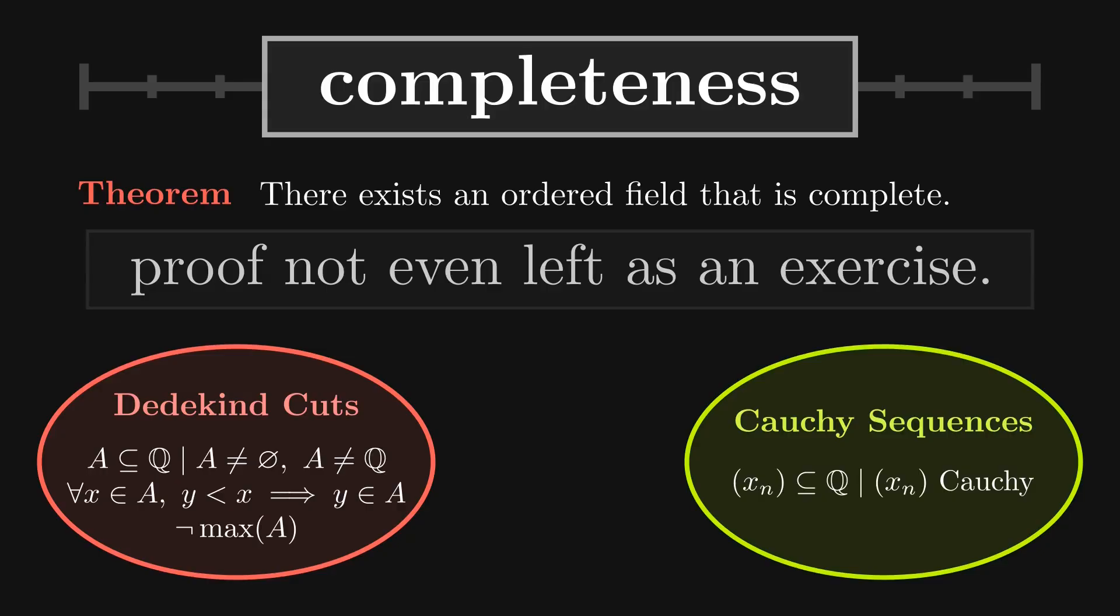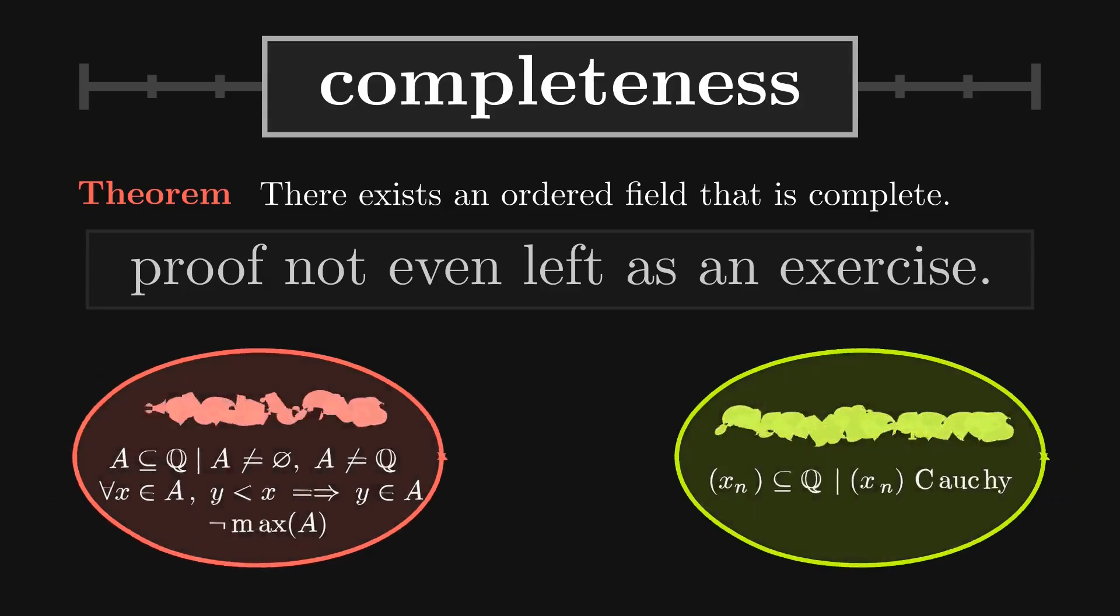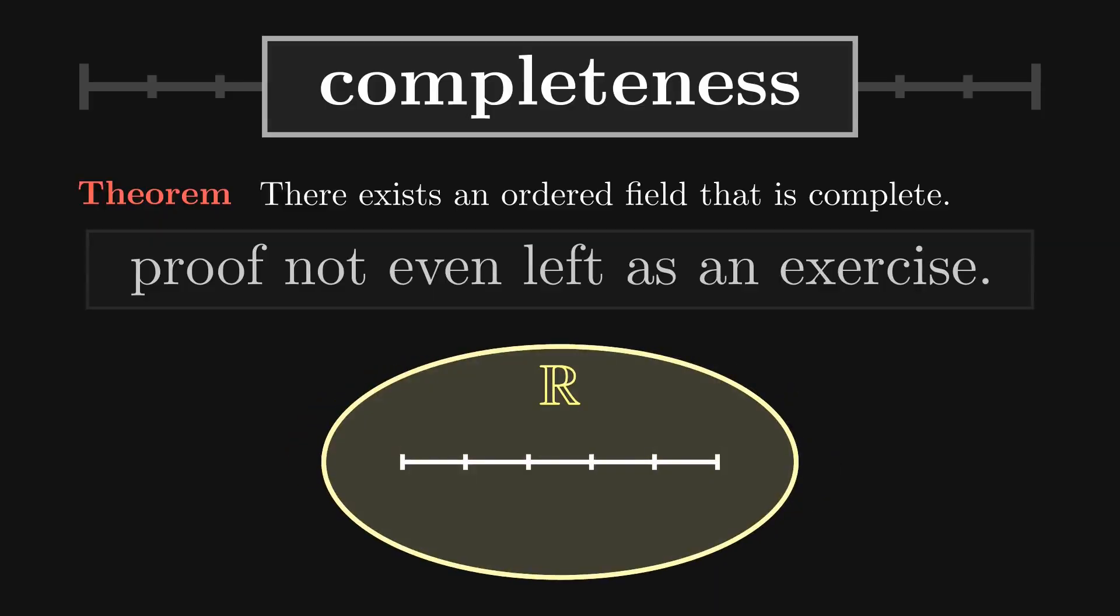Dedekind cuts define real numbers as special subsets of the rationals. Another approach characterizes them as equivalence classes of convergent sequences. Both constructions ultimately produce the same structure, a complete ordered field.